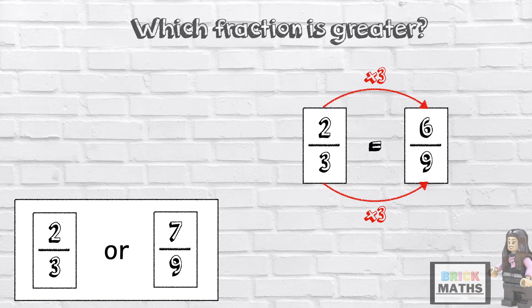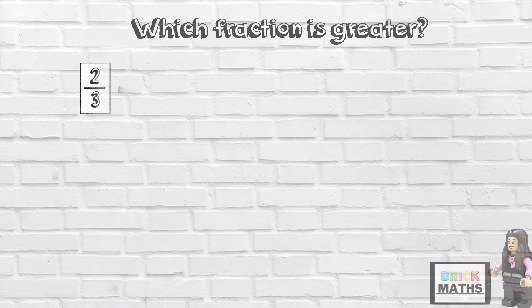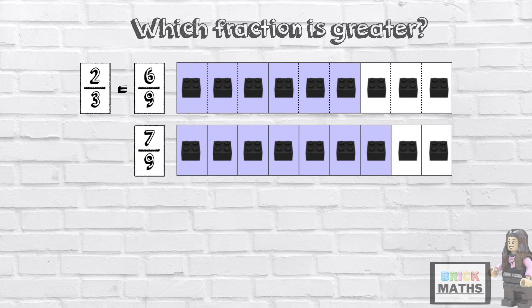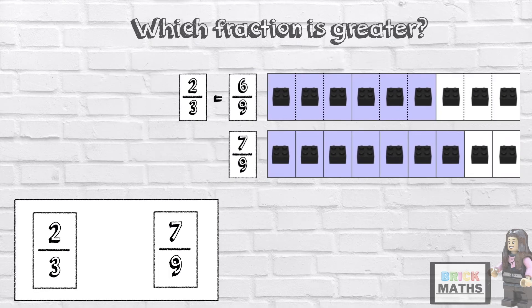So 2 thirds is equivalent to 6 ninths. Now that we've got the same denominator, we can clearly see which is the greater fraction. 6 ninths is less than 7 ninths, which means 2 thirds is less than 7 ninths.